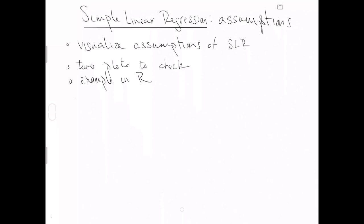This video is about the assumptions of simple linear regression. Assumptions is the statistician's word for what are the statements that define ideal data — ideal data for the simple linear regression model. Our assumptions here are going to be characteristics, statements about what ideal data look like. The easiest way to understand them is to visualize them.